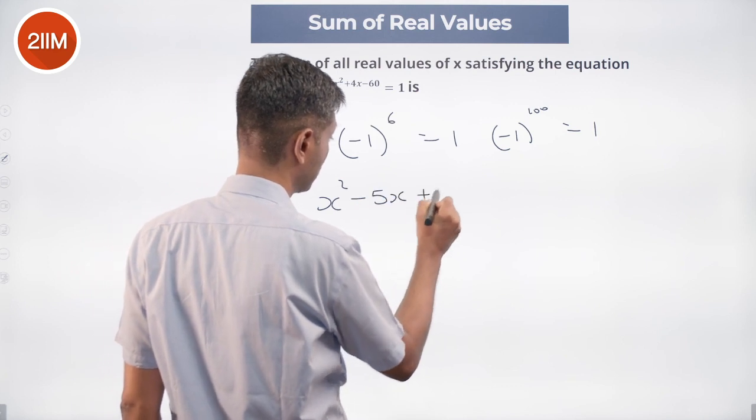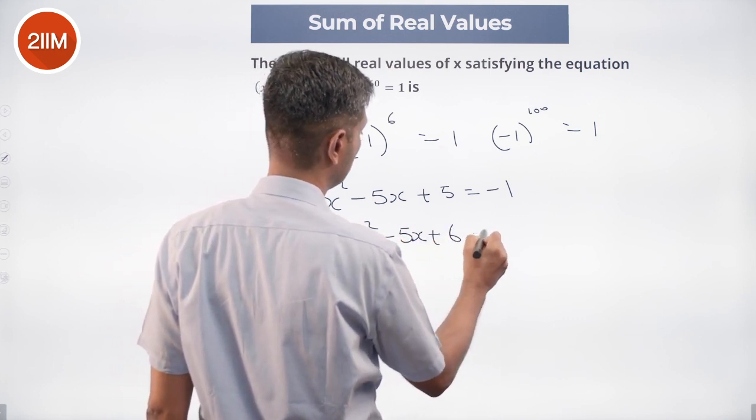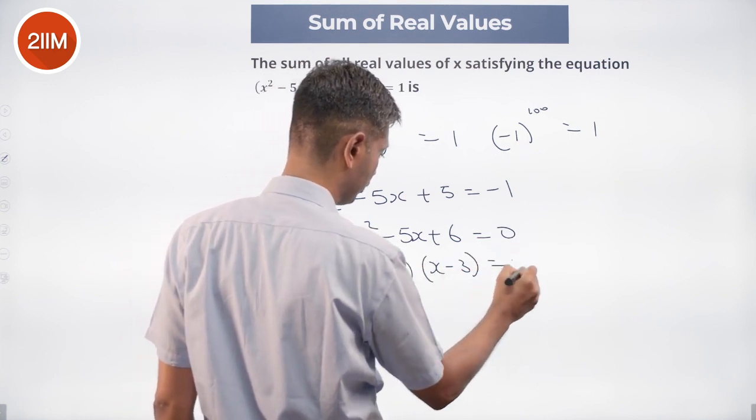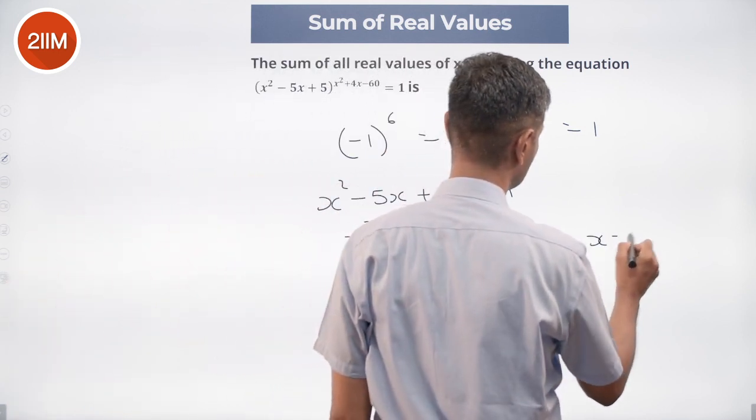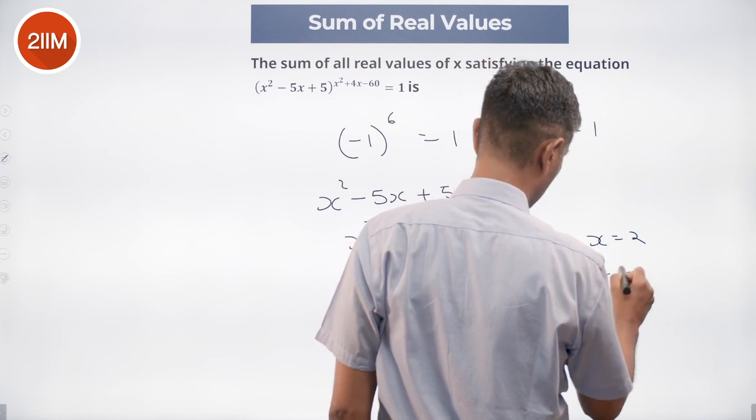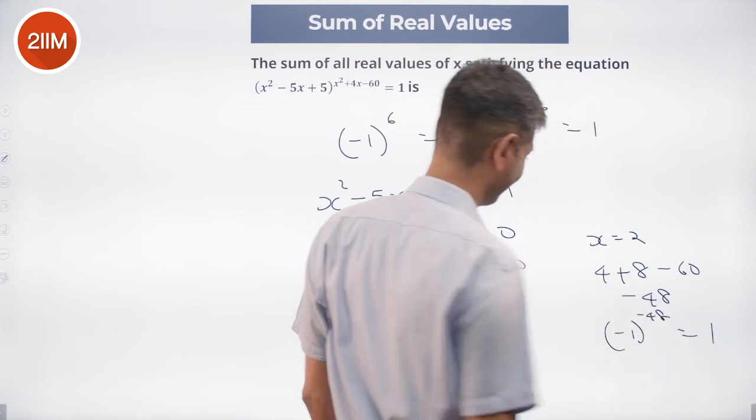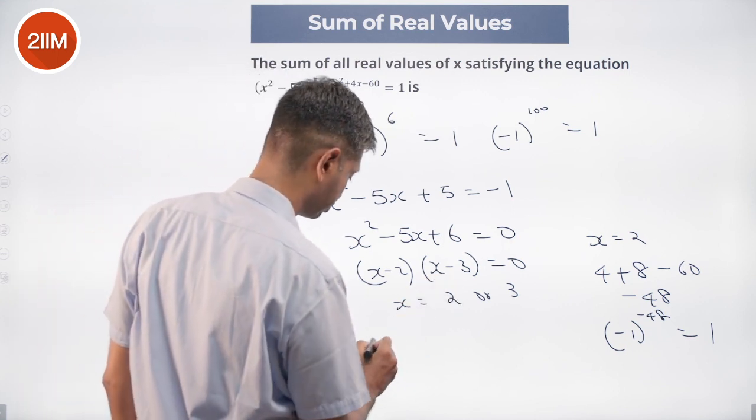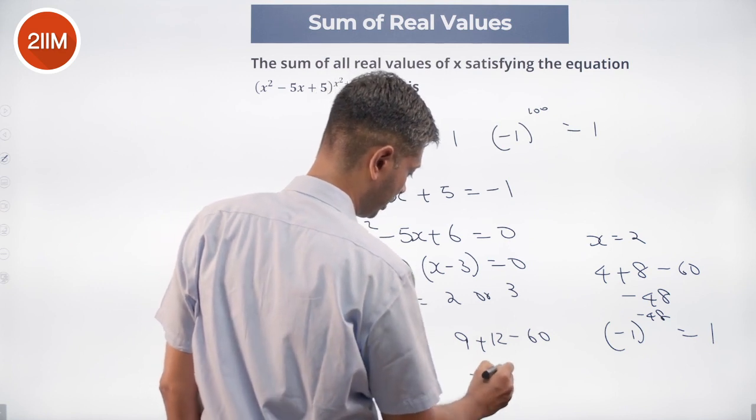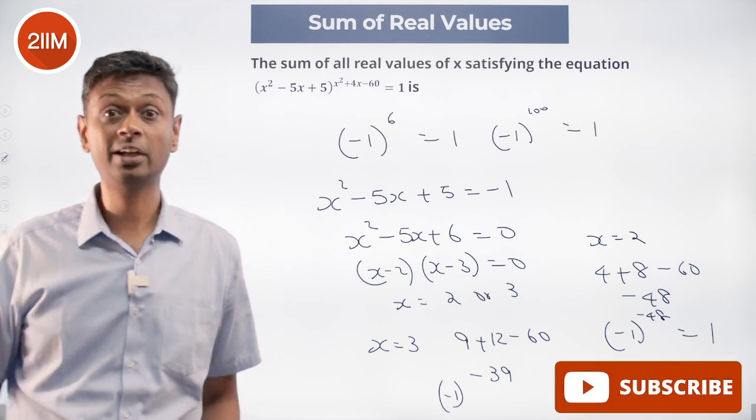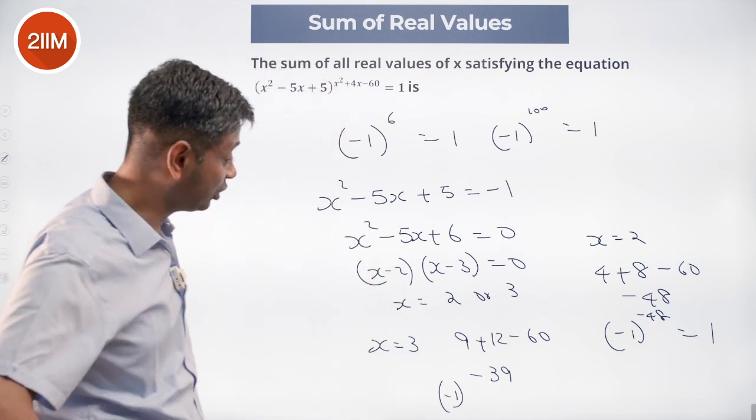x² - 5x + 5 = -1, or x² - 5x + 6 = 0. (x - 2)(x - 3) = 0. x could be 2 or 3. Now we will substitute x is 2 or 3 here. x = 2: 2² is 4 plus 4 into 2 is 8 minus 60, 12 - 60 is -48. -1 power -48 that is 1, beautiful. Then we substitute x = 3: 3² is 9 plus 4 into 3 is 12 minus 60, 21 - 60 is -39. -1 power -39 is -1, this does not work. So x = 3 does not work, 2 works.